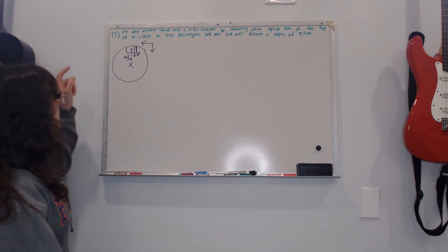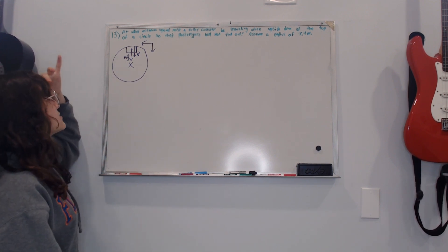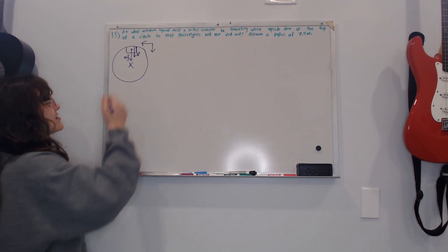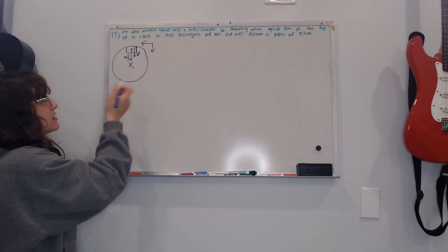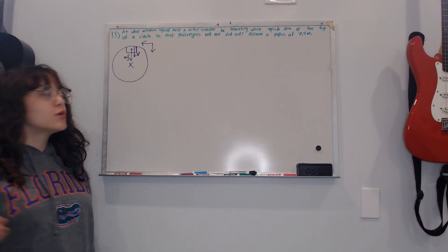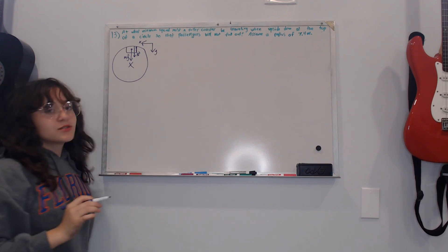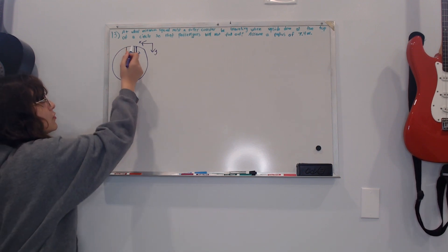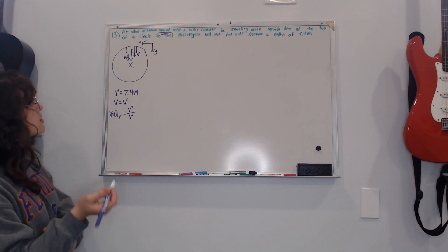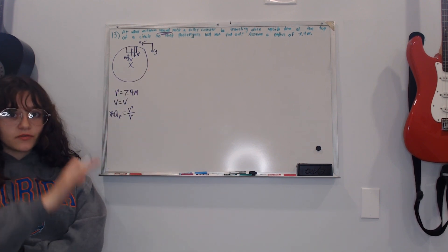The free body diagram shows mg pointing downward from the center of the car toward the center of the circle, marked with an X. The axis points downward toward the center of the circle. The x-axis doesn't matter here because we're not using any forces along it. The normal force acts from the bottom of the track. The known values are radius equals 7.4 meters, and we're solving for v. The formula is radial acceleration equals v squared over r.